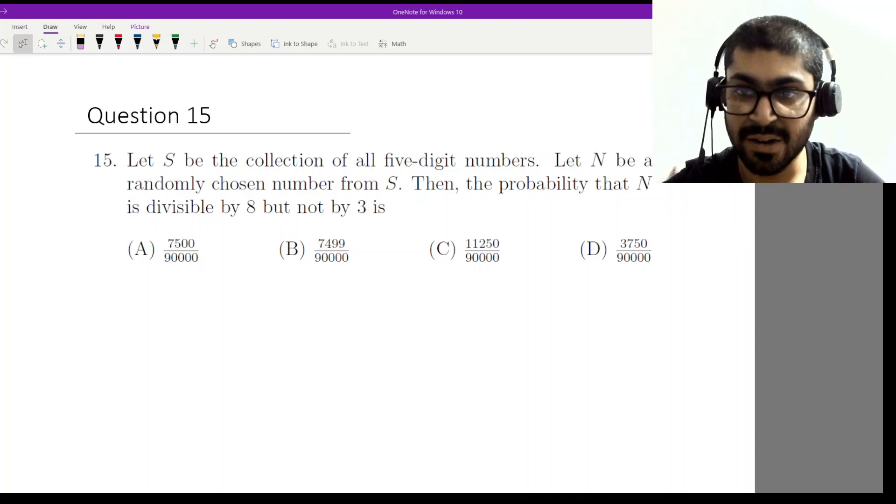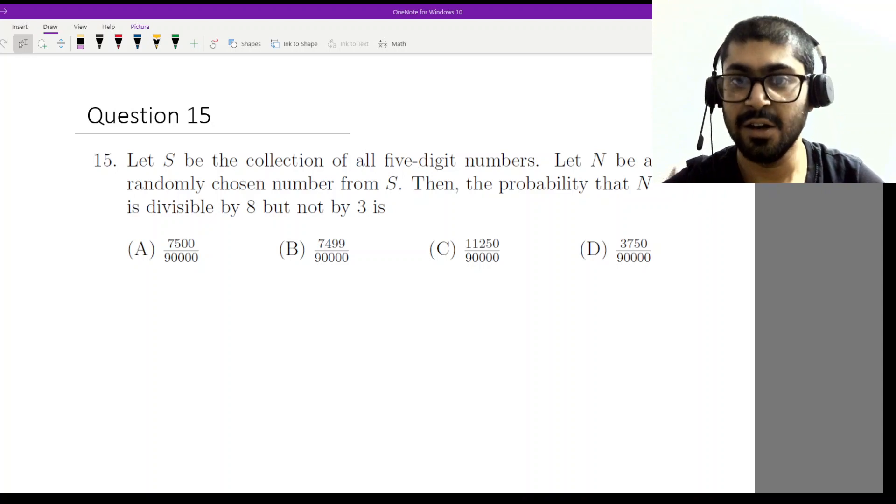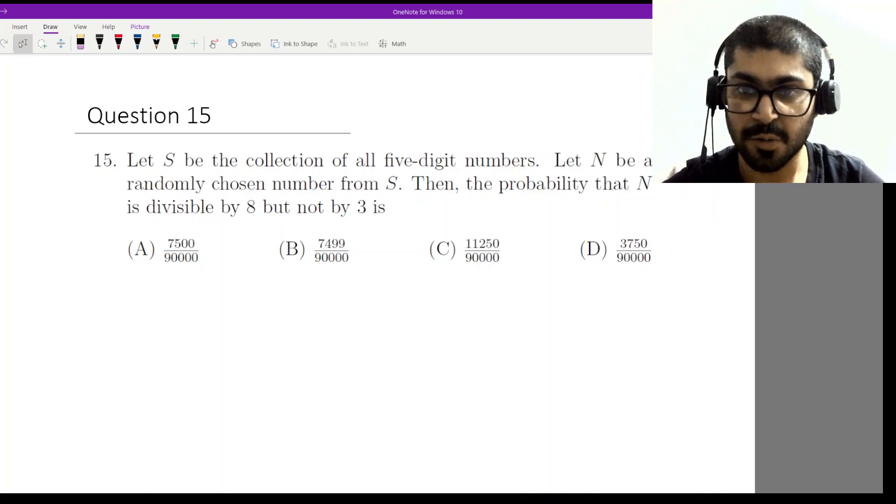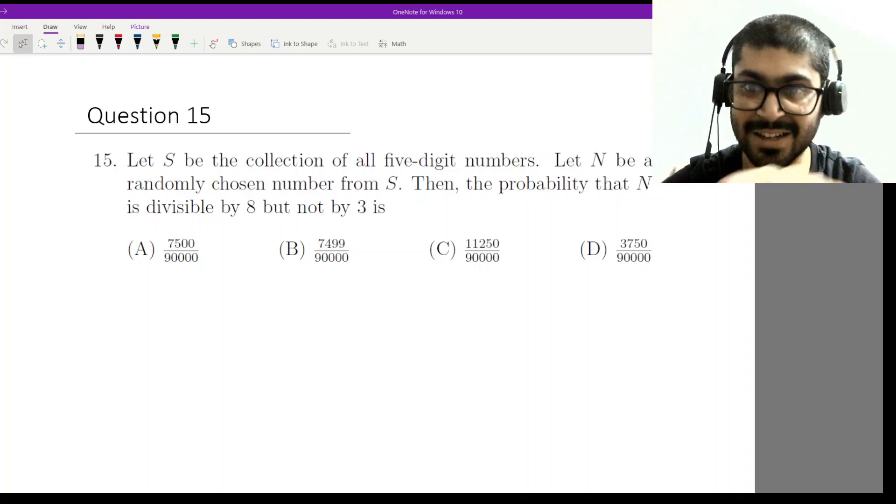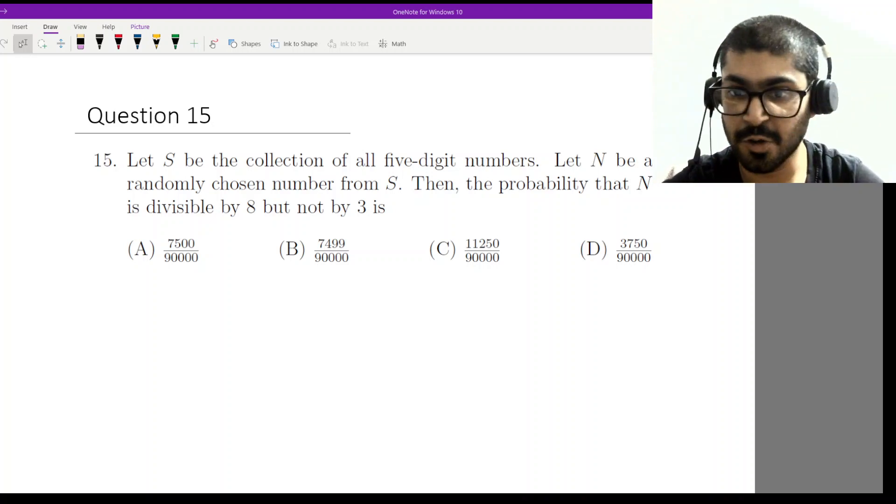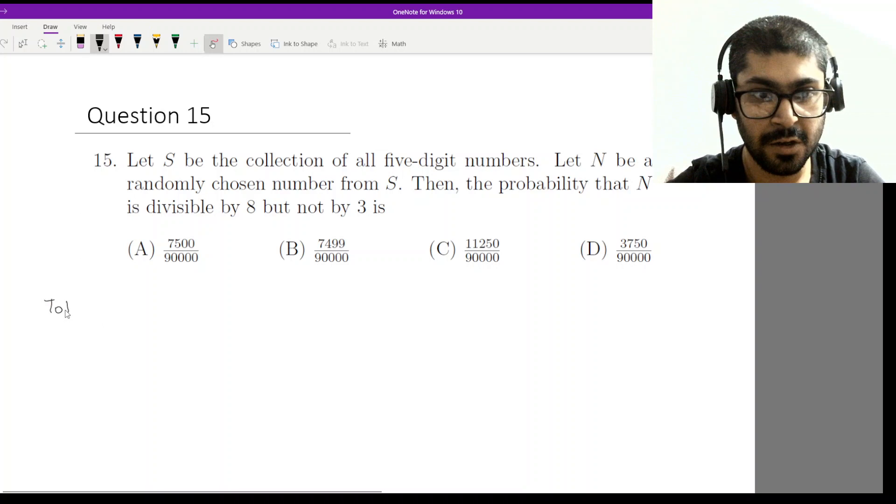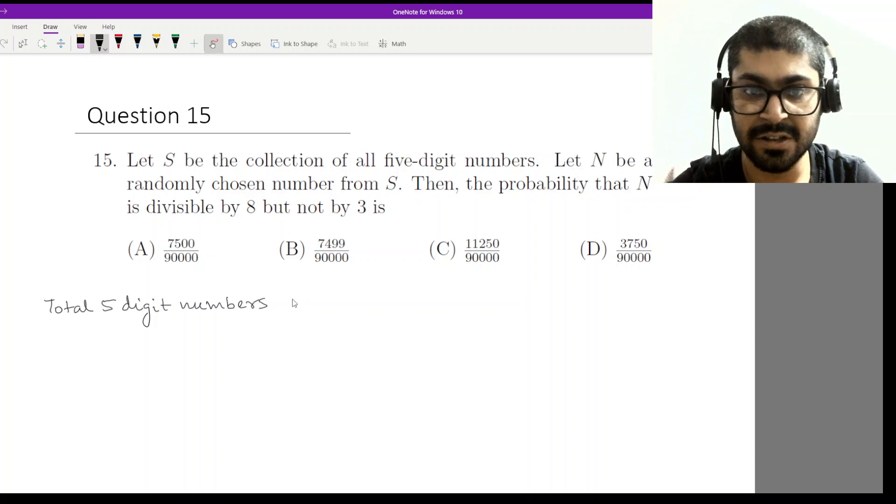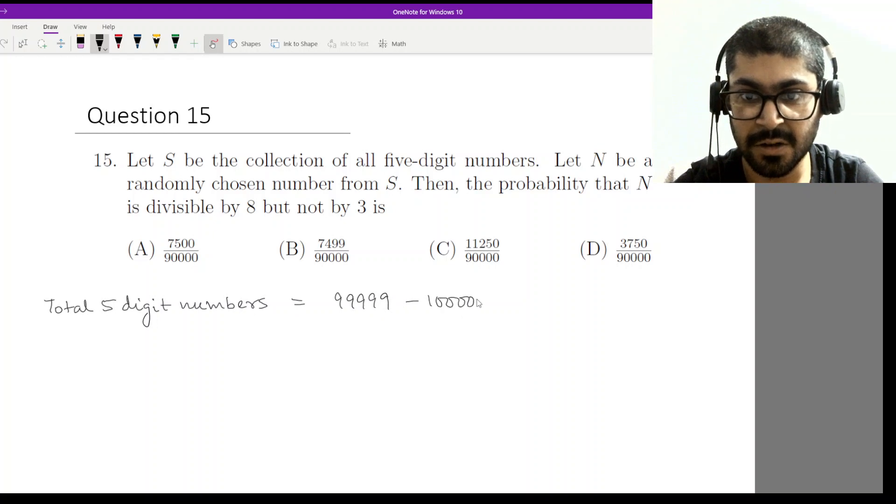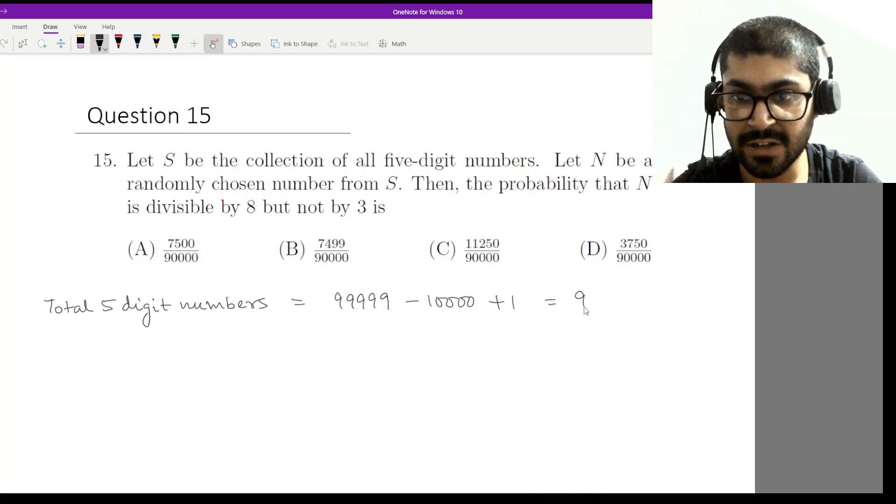How many possible values are there? We have to calculate that. There are 99,999 minus 10,000 plus one values because we also calculate the endpoints. So total five-digit numbers would be 99,999 minus 10,000 plus one, which is 90,000.